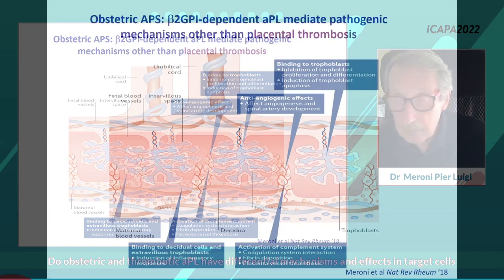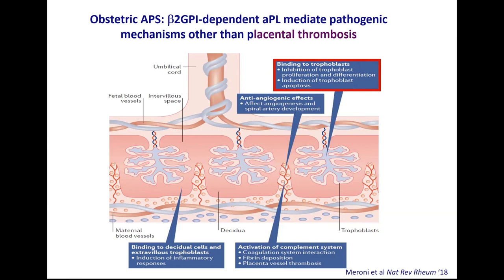If the maternal blood contains anti-beta-2-glycoprotein-1 antibodies, these antibodies can bind to the beta-2, and after binding they can inhibit trophoblast proliferation and differentiation, induce trophoblast apoptosis, affect angiogenesis, and spiral artery development. So the main effect is on steps important for physiological placentation. In other words, beta-2-glycoprotein-1-dependent antiphospholipid antibodies mediate pathogenic mechanisms other than placental thrombosis.